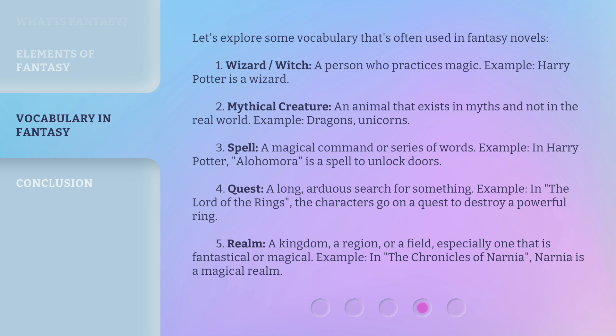Fifth, realm — a kingdom, a region, or a field, especially one that is fantastical or magical. Example: in The Chronicles of Narnia, Narnia is a magical realm.